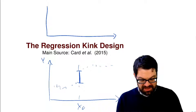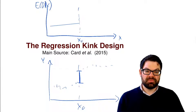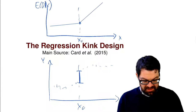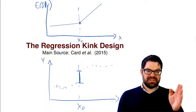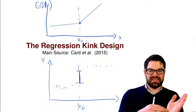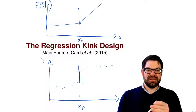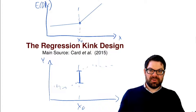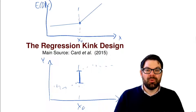What we have is a kink in the assignment function of treatment. What this would look like is: you have the discontinuity x0, and let this be the probability of getting treated for a given level of x. You have a function below, and then that function has a kink at the discontinuity. It's not a discontinuous jump, but it's a change in the first derivative of the assignment function of treatment. And this can also be used for causal identification.